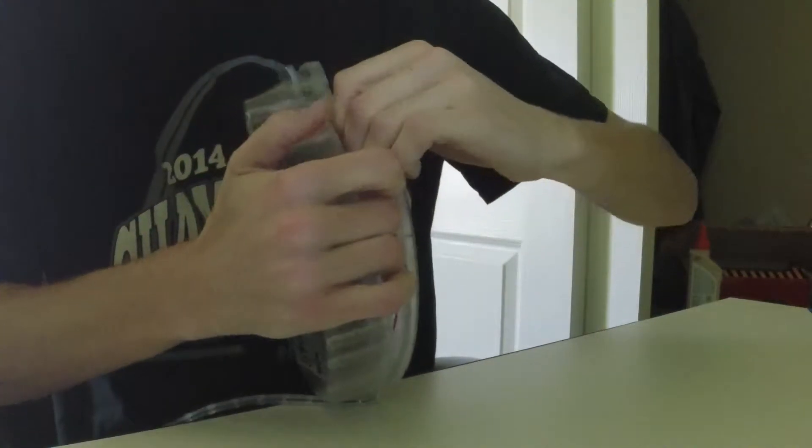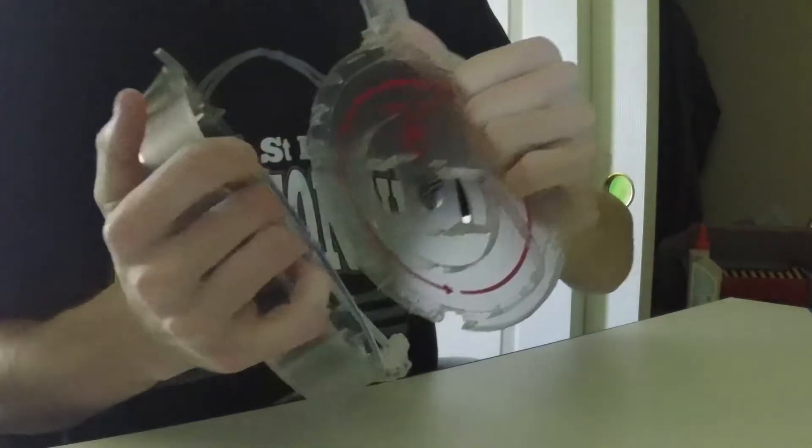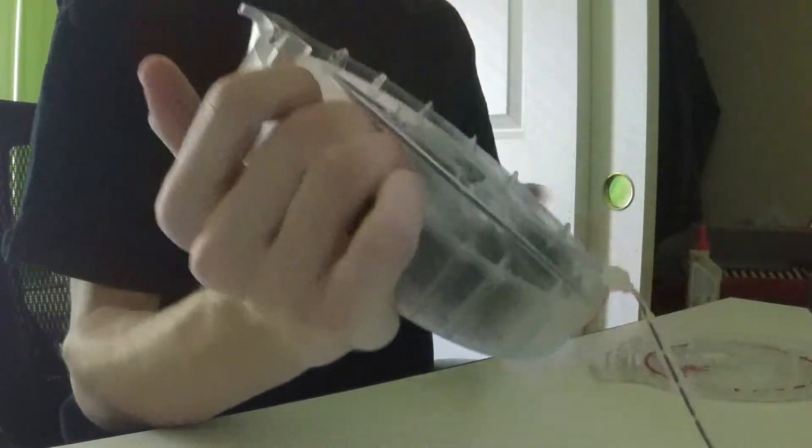Then, remove the top by unlatching the inner clips. This may hurt your hands, and it might sound like the cartridge clips are breaking. This is normal.